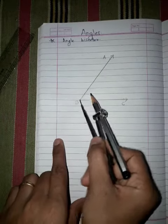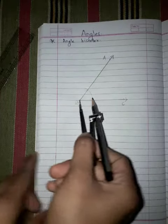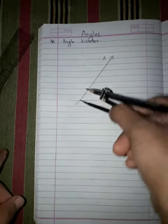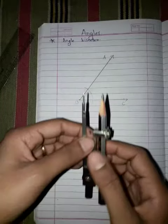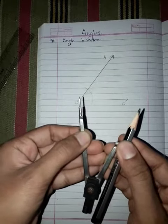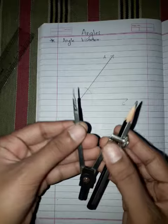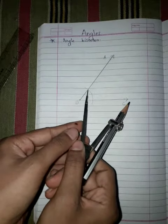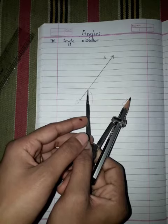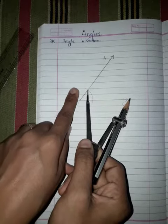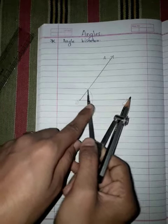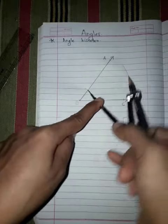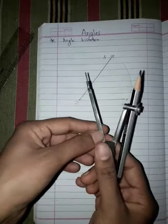After that we will extend the distance between the angle of the given compass. Then we will place the sharp end at the first arc edge here and cut the arc without changing the distance of the compass.